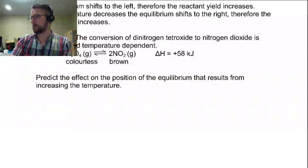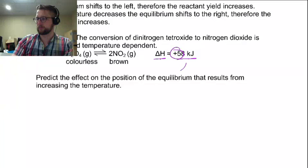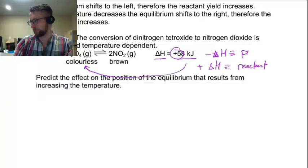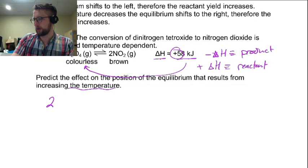So here the conversion of dinitrogen tetroxide is reversible and temperature dependent, and we notice that the delta H is a positive value. The positive value suggests that it is a reactant, so positive delta H equals reactant. Negative delta H is the equivalent of a product. So if we predict the effect on the position of equilibrium that results from an increase in temperature...